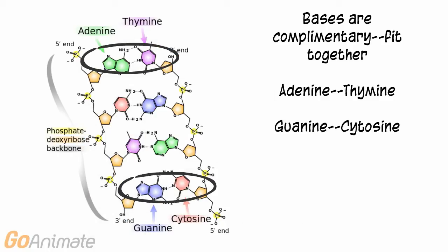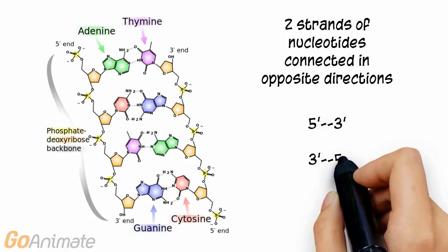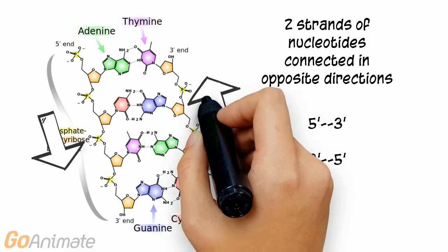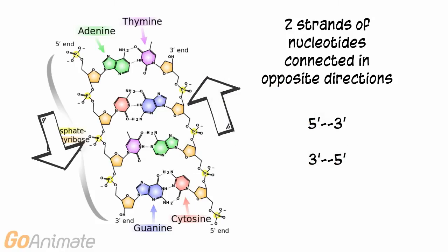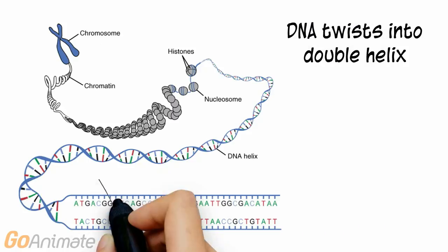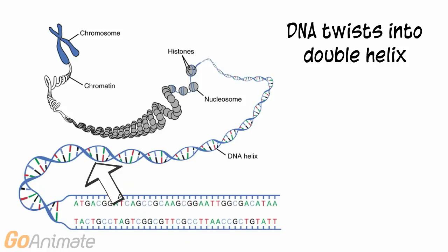The bases are complementary, which means they can fit together to form base pairs. Adenine can pair with thymine, and guanine can pair with cytosine. The bases form pairs that interconnect the two strands of nucleotides, which are connected in opposite directions. The two nucleotide strands twist together to form the double helix structure of DNA.